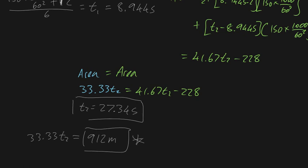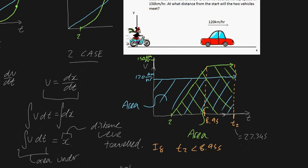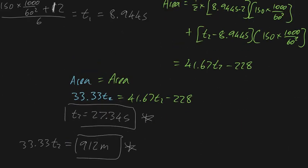Before ending, note that t2 is 27.34 seconds, which is greater than t1 of 8.9 seconds — that confirms case one applies. But what if t2 had been less than t1 at 8.95 seconds? That would mean the bike met up with the car while it was still accelerating, which would mean you could no longer apply this formula and would have to recalculate the areas. Whilst simple in that we only use two formulas, you really have to think ahead about how you're applying them.